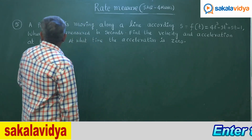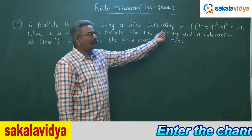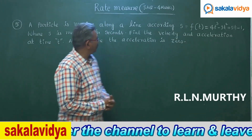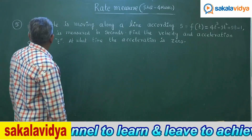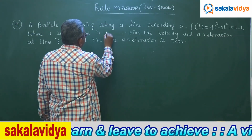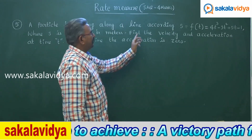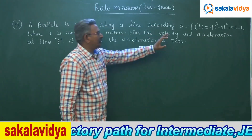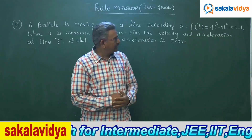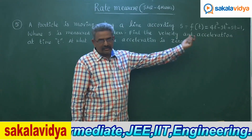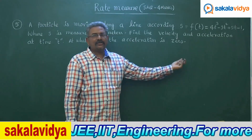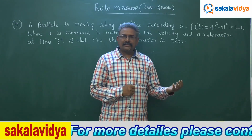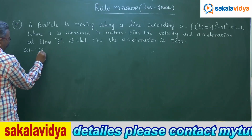First, let me read the question. A particle is moving along its line according to s = f(t) = 4t³ - 3t² + 5t - 1, where s is measured in meters and t in seconds. Find the velocity and acceleration at time t, and at what time the acceleration is 0. To solve this problem, we need to find acceleration and then equate it to 0 to find t.